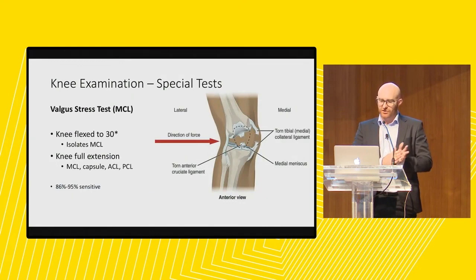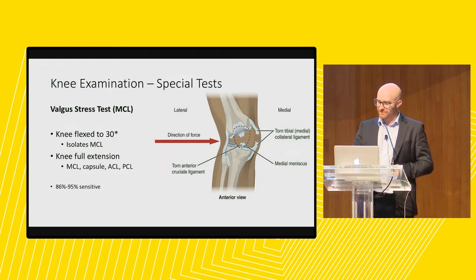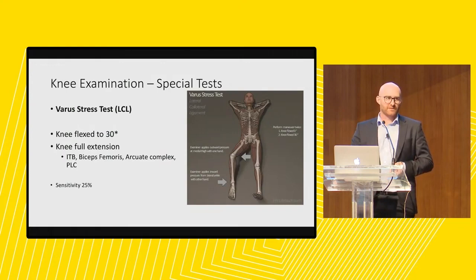For the MCL stress test or valgus stress test, the main take-home point is to do this with the knee at 30 degrees of flexion, which isolates the MCL. If you do it in full extension, you're stressing the capsule, ACL, PCL and MCL all at once, reducing the accuracy of findings. It's very sensitive and specific for MCL injuries.